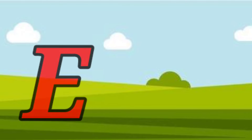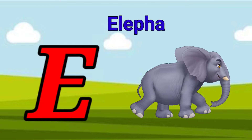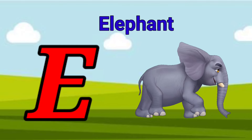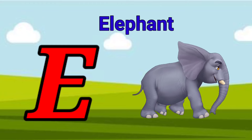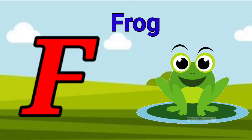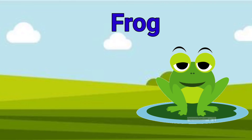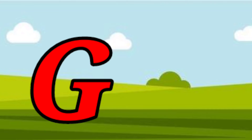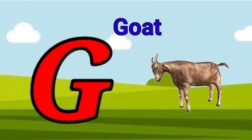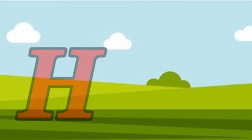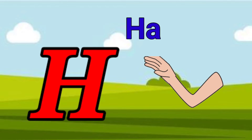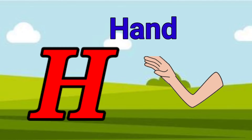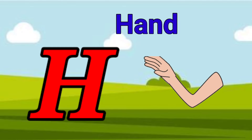E is for elephant, e-e-elephant. F is for frog, f-f-frog. G is for goat, g-g-goat. H is for hand, h-h-hand.